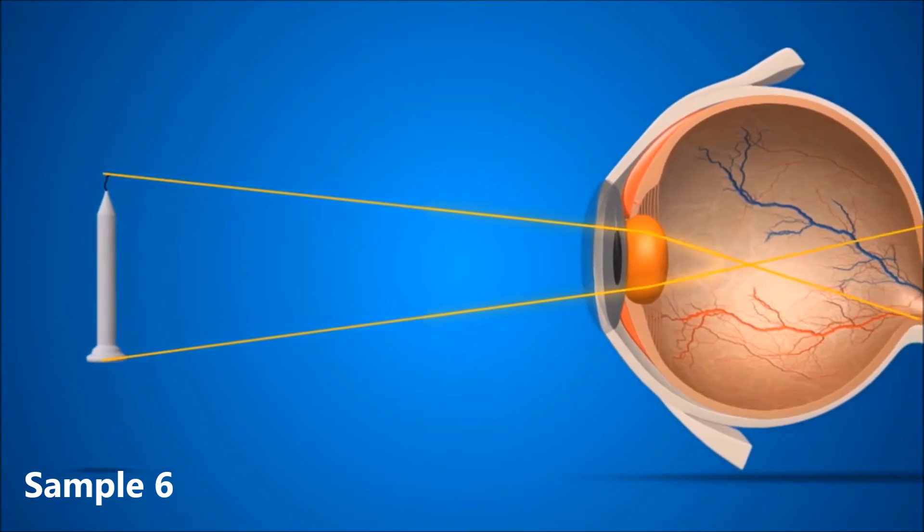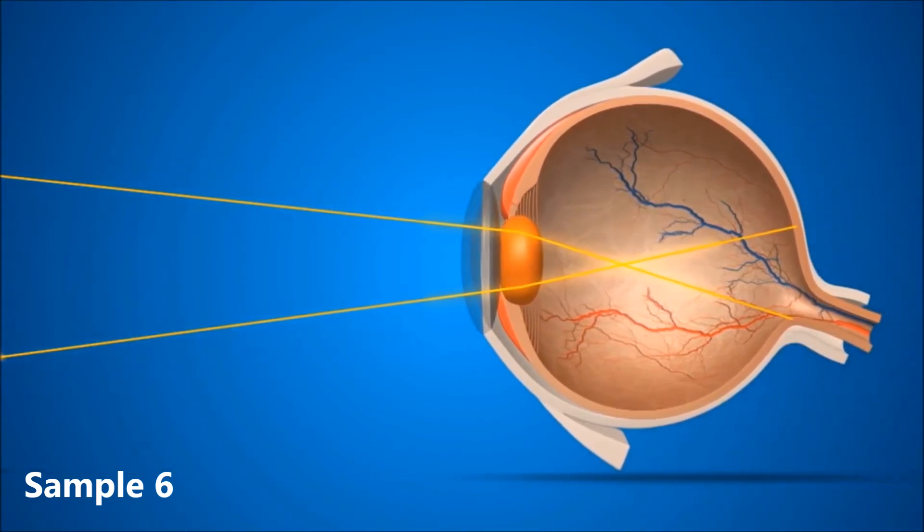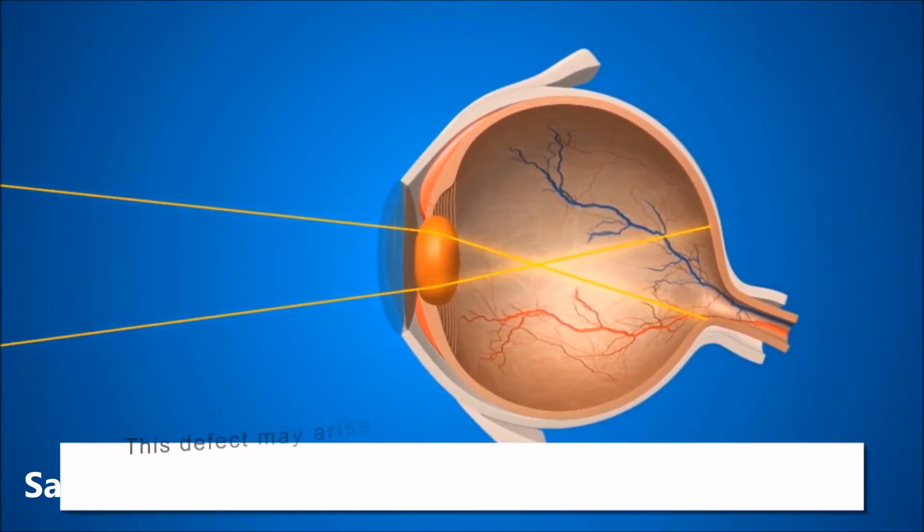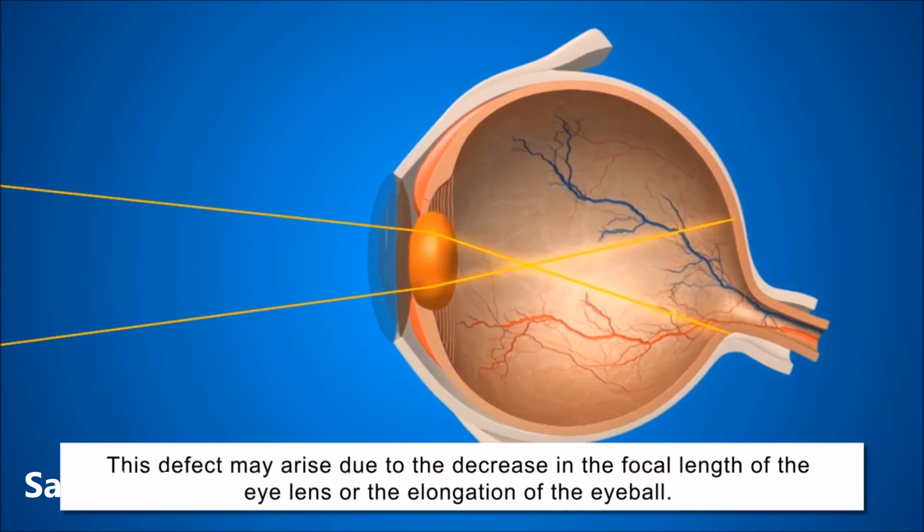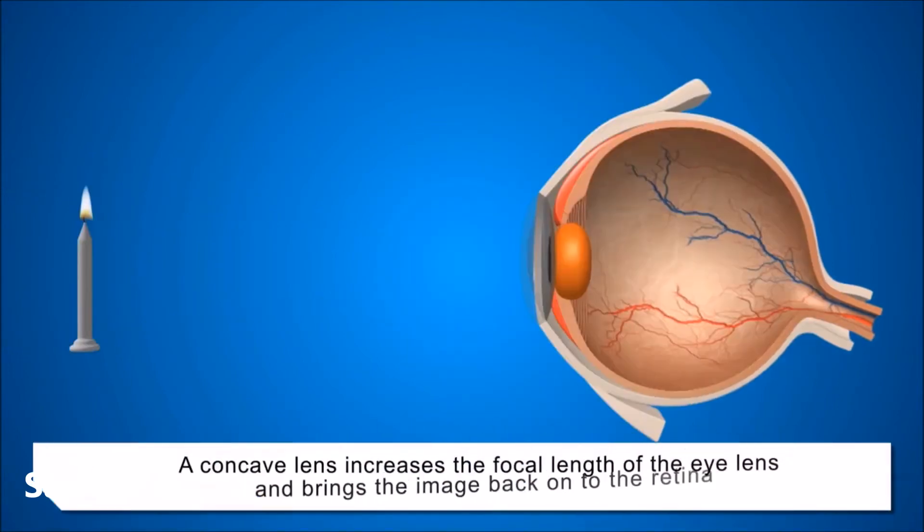In a myopic eye, the image of a distant object is formed in front of the retina. This defect may arise due to the decrease in the focal length of the eye lens or the elongation of the eyeball.